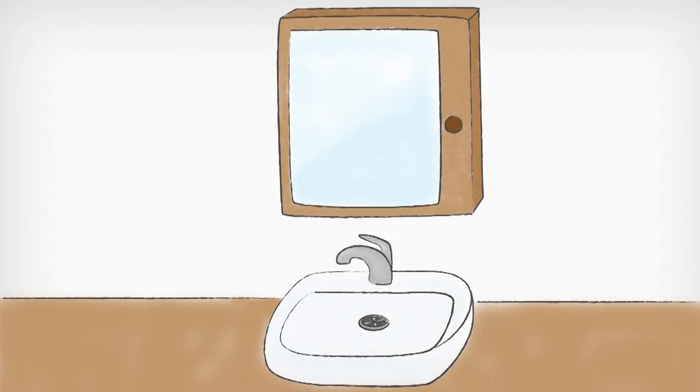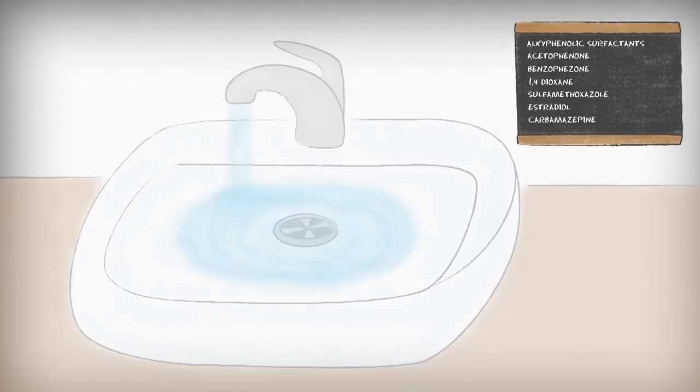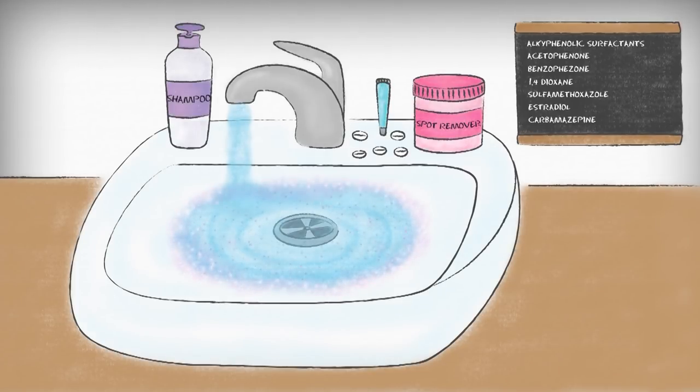Emerging pollutants result, for instance, from the use of everyday products, such as detergents, personal care products, and medicines. When we use and dispose of these items, residues are flushed down the drain with the wastewater.